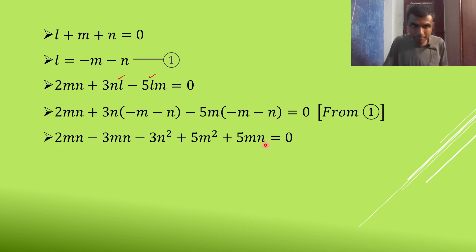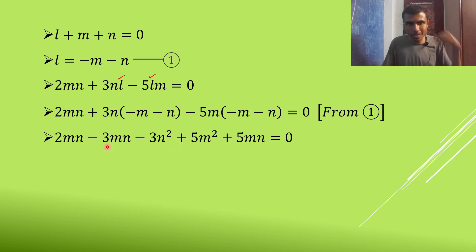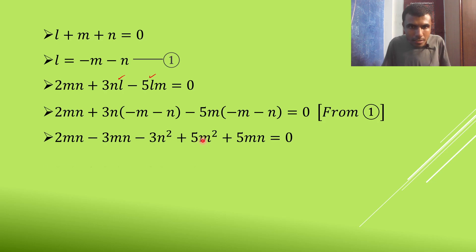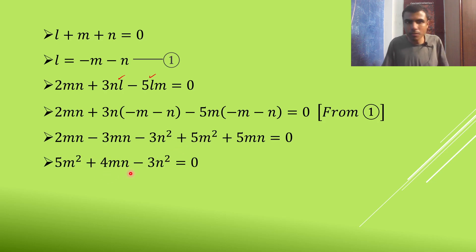Collecting terms: 2MN − 3MN + 5MN gives 4MN, and we have +5M² − 3N². So what I get is: 5M² + 4MN − 3N² = 0.